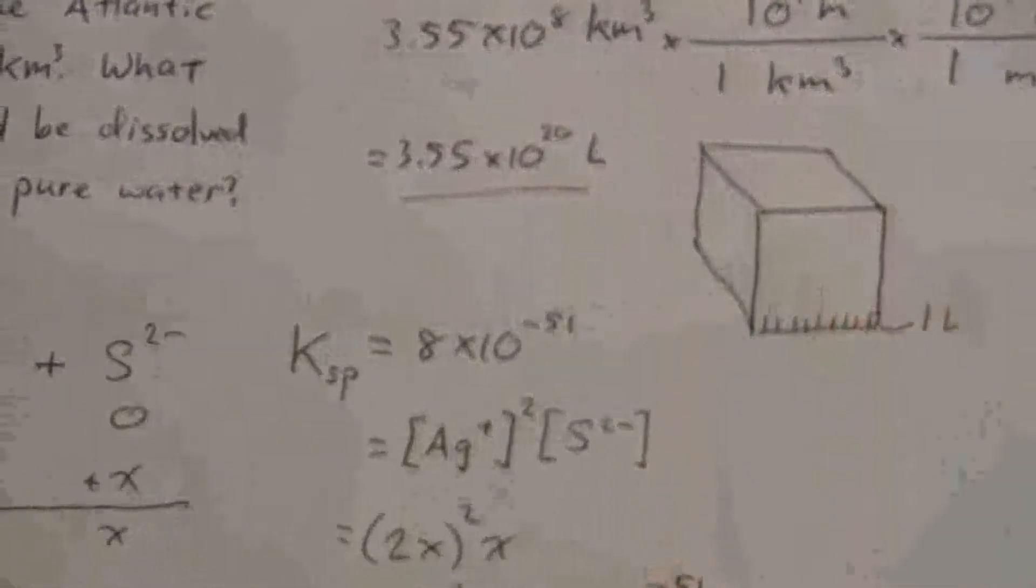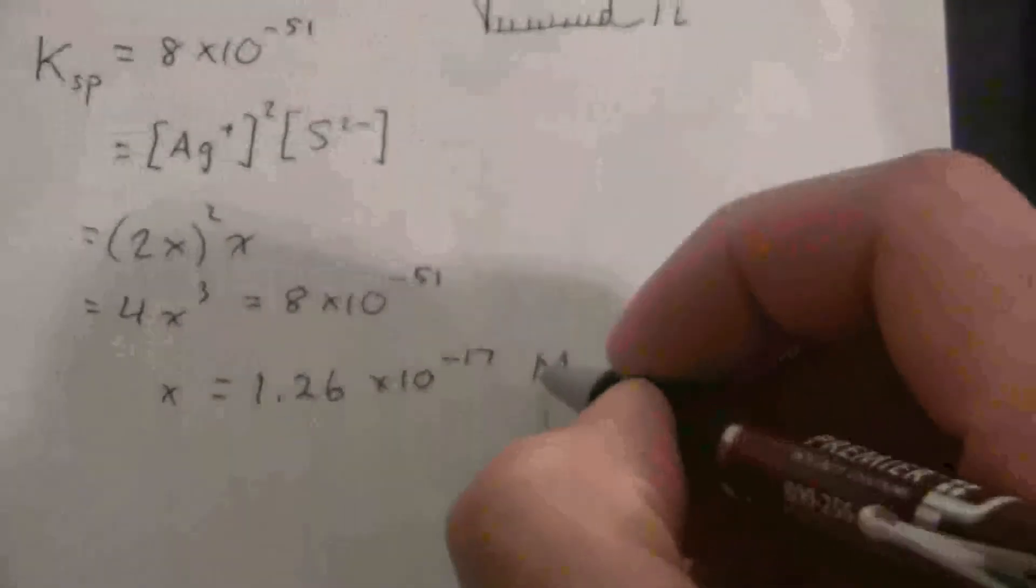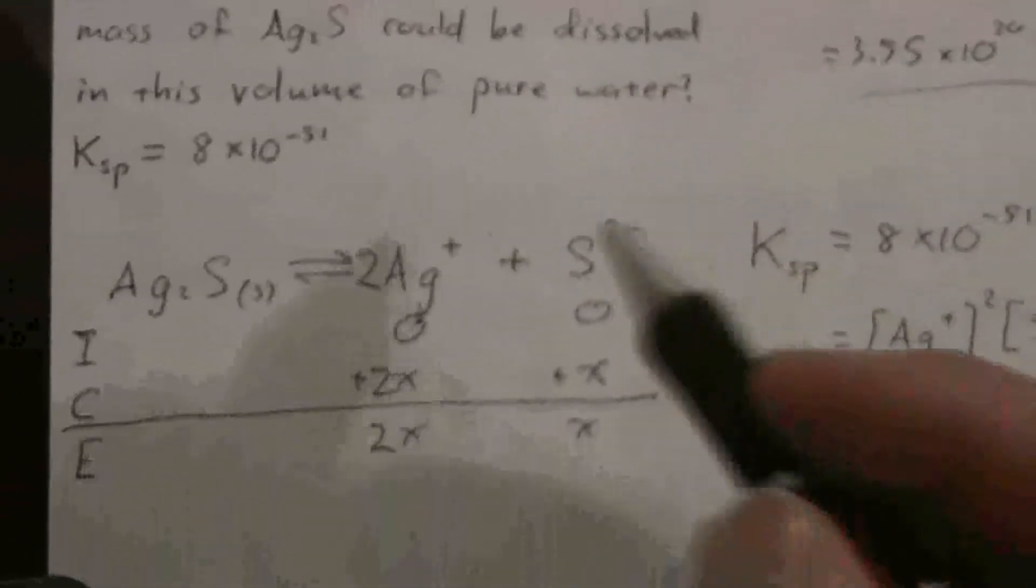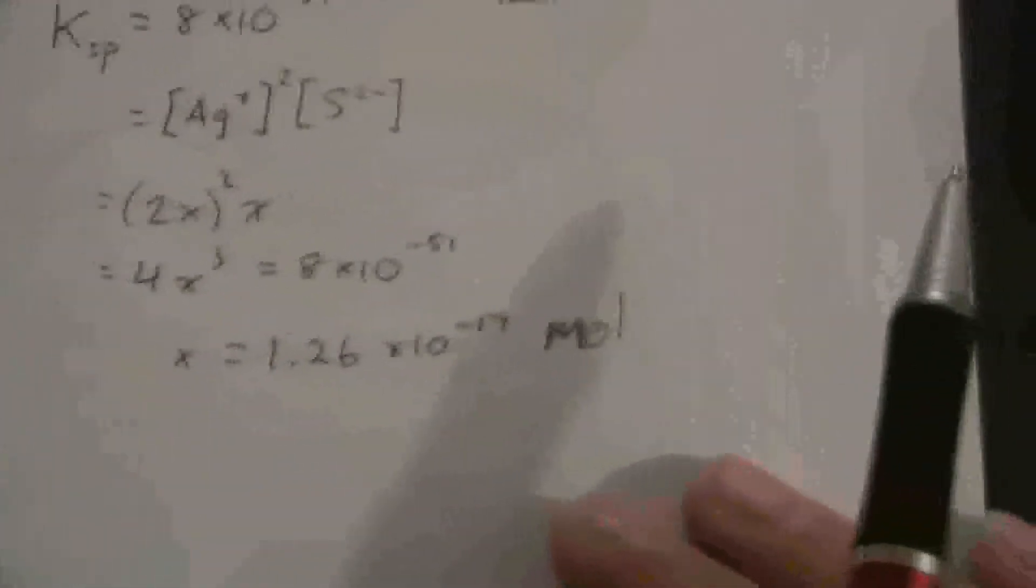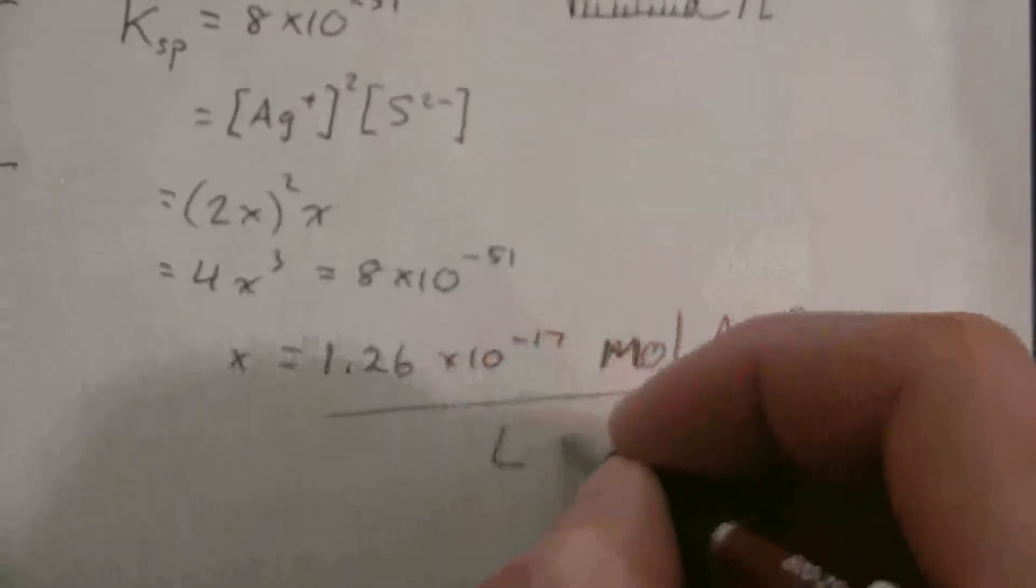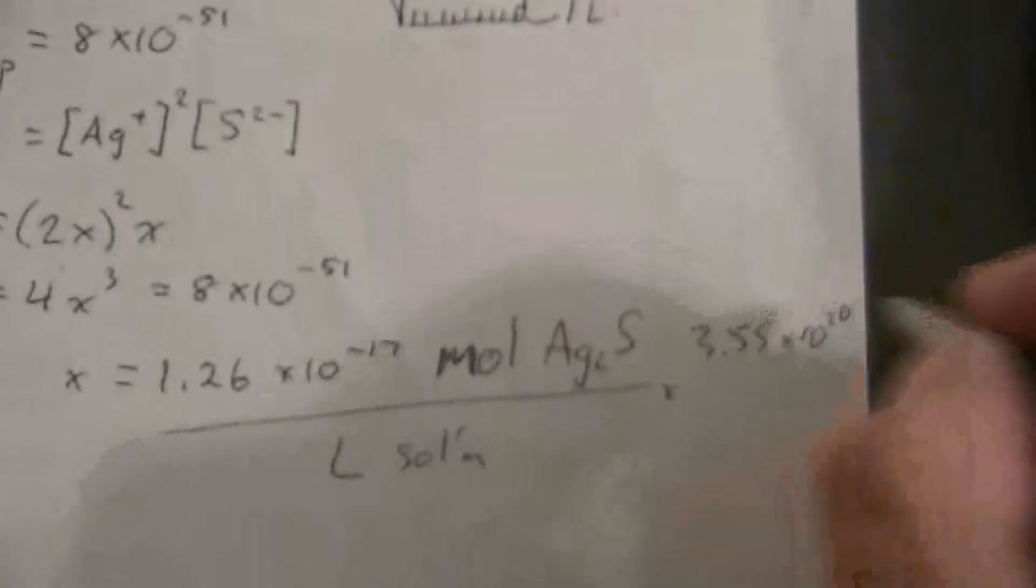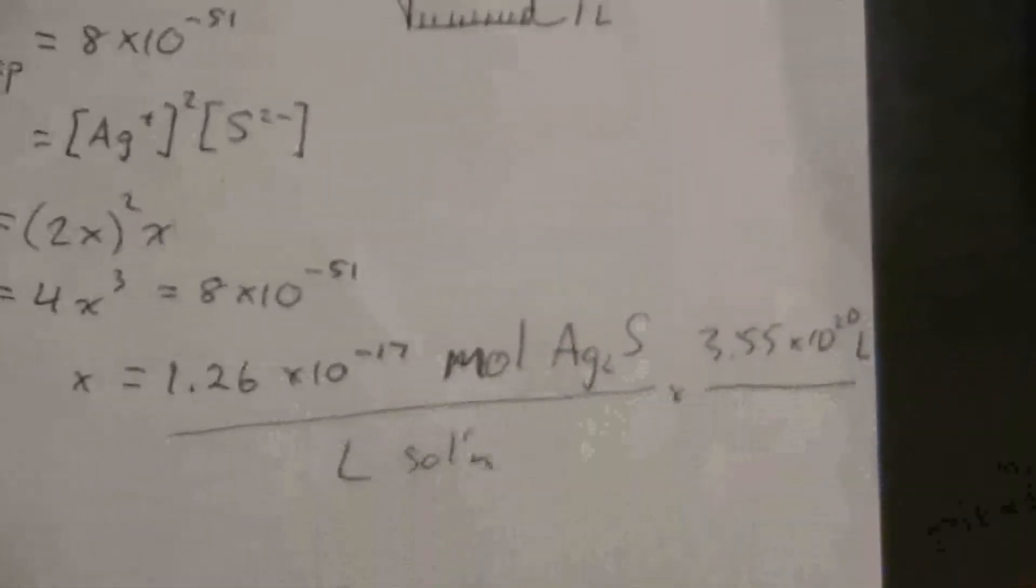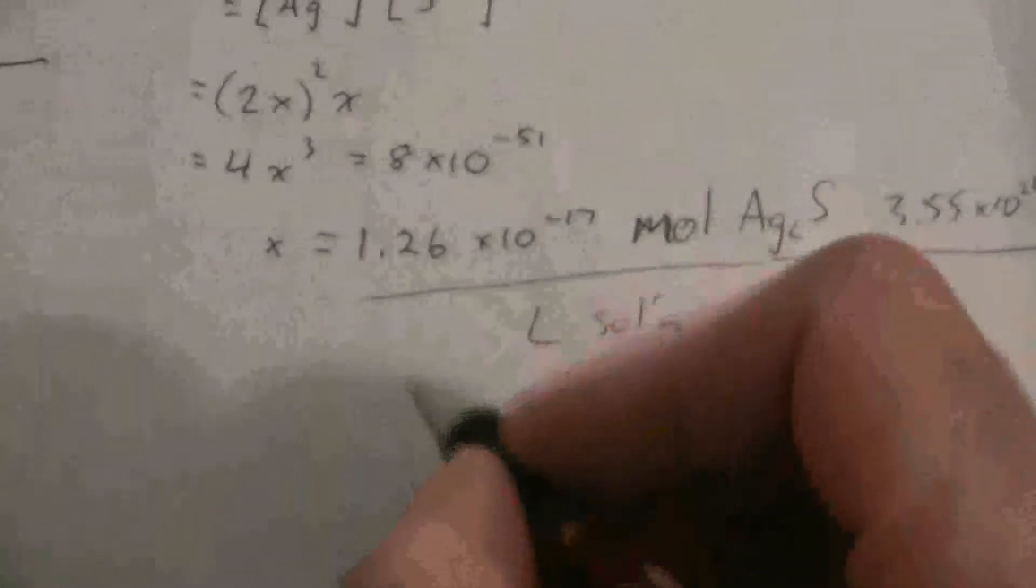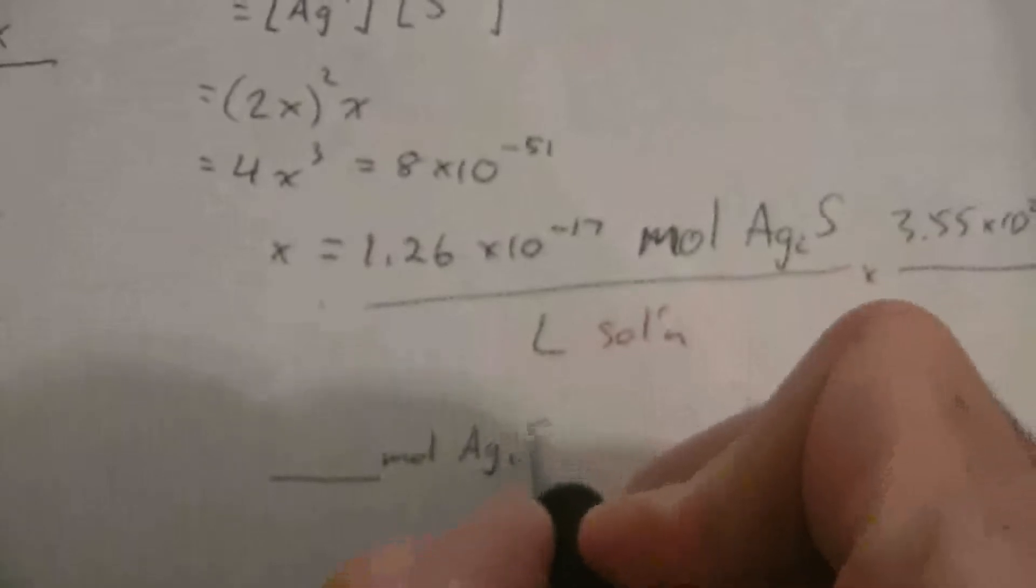I have this volume, the volume of the ocean. Moles per liter - that's molarity. So I can say this would be moles of sulfide per liter. Of course that's the same as the moles of silver sulfide. So I'll write that out as moles of silver sulfide per liter of the solution. And I have 3.55 times 10 to the 20th liters.